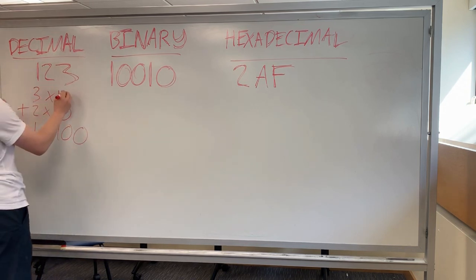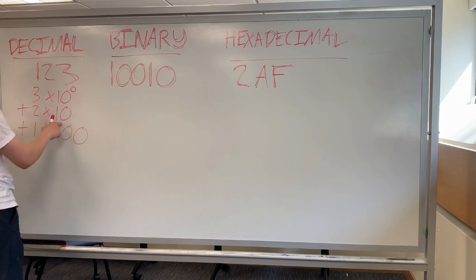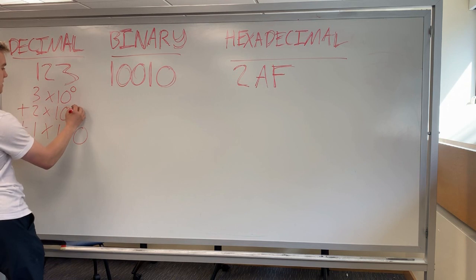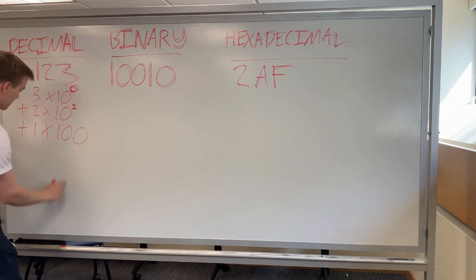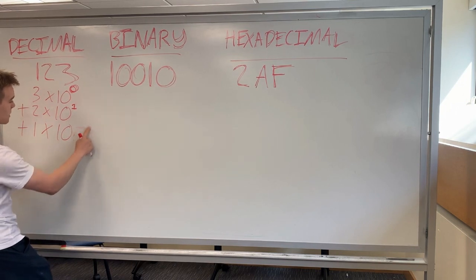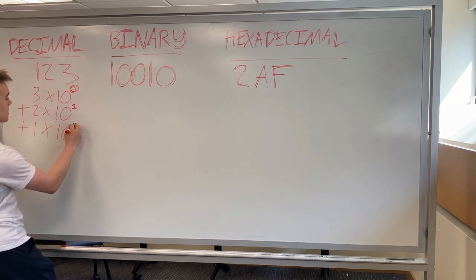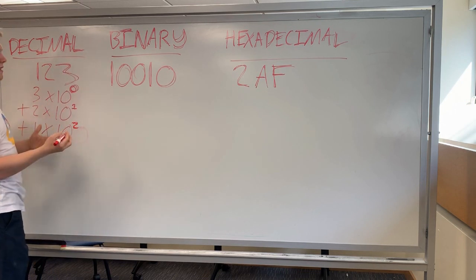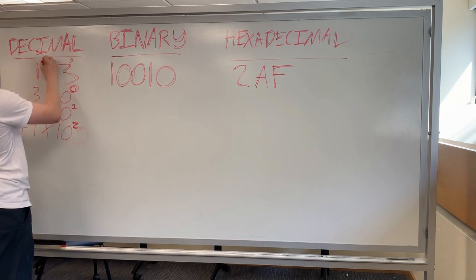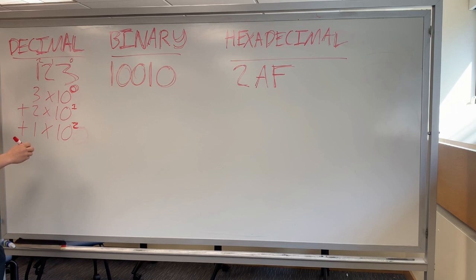In other words, 1 is 10 to the 0, 10 is 10 to the 1, I don't know if you can see these small numbers, and then 100 is actually just, if we raise the 0, it is 10 to the 2. So each time we move over a digit, we're increasing the power of 10 by 1. Here it's 0, here it's 1, here it's 2.